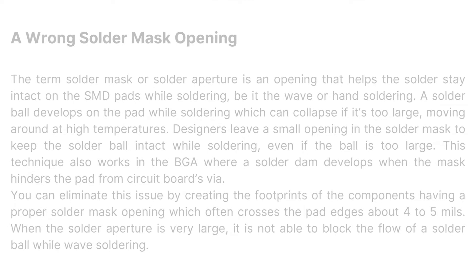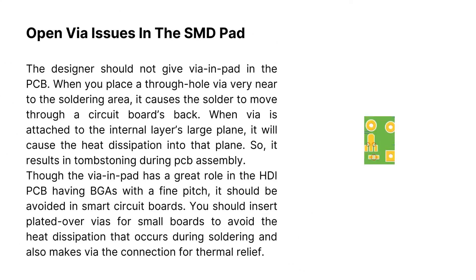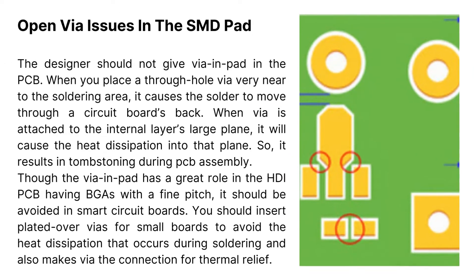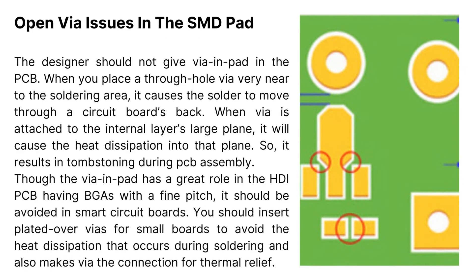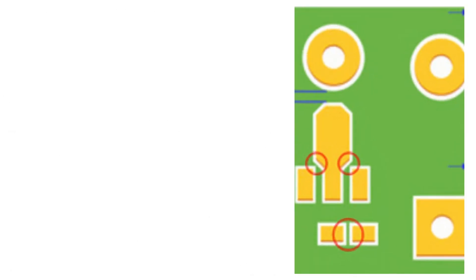Open via issues in the SMD pad: the designer should not place a via in pad on the PCB. When you place a through-hole via very near to the soldering area, it causes the solder to move through the circuit board's back. When a via is attached to the internal layer's large plane, it will cause heat dissipation into that plane, resulting in tombstoning during PCB assembly. Though the via in pad has a great role in HDI PCBs with BGAs of fine pitch, it should be avoided in standard circuit boards. You should insert plated-over vias for small boards to avoid heat dissipation during soldering and to make the via connection for thermal relief.